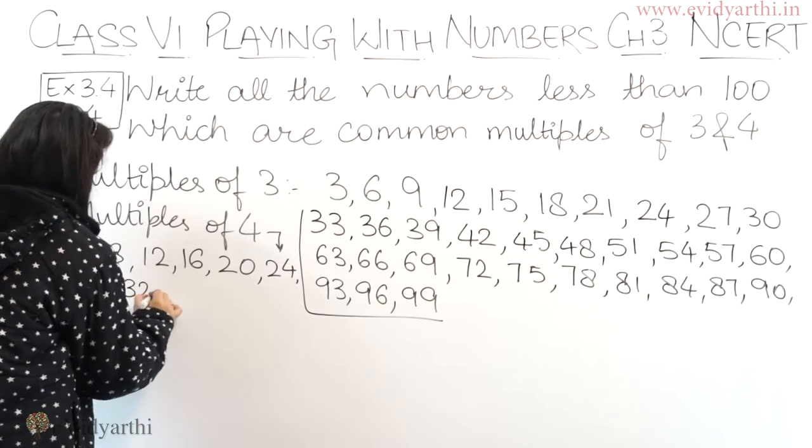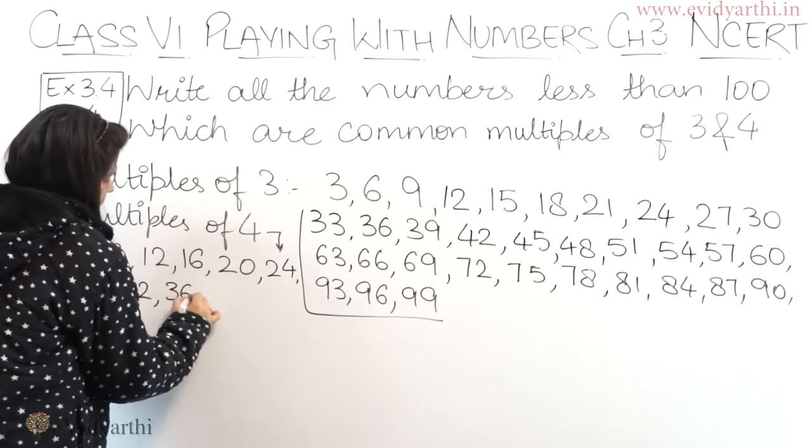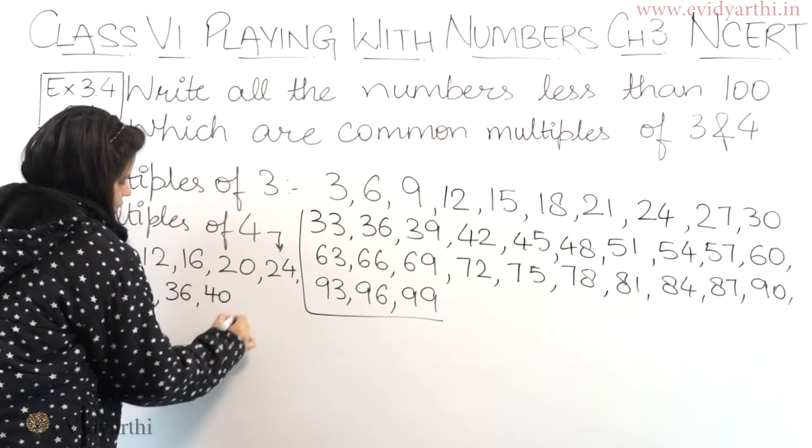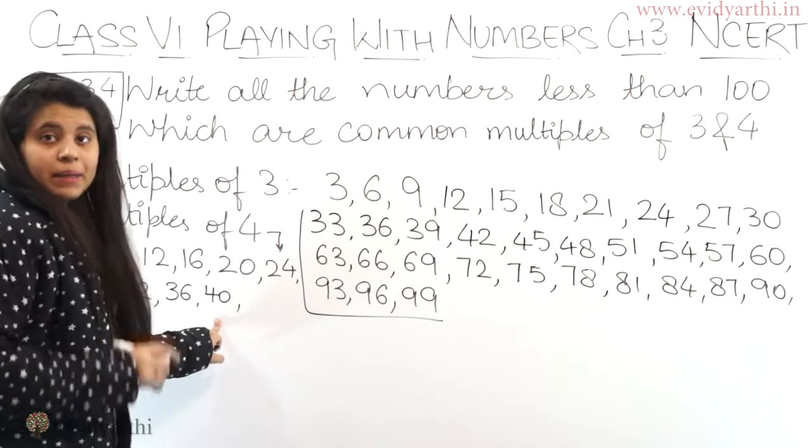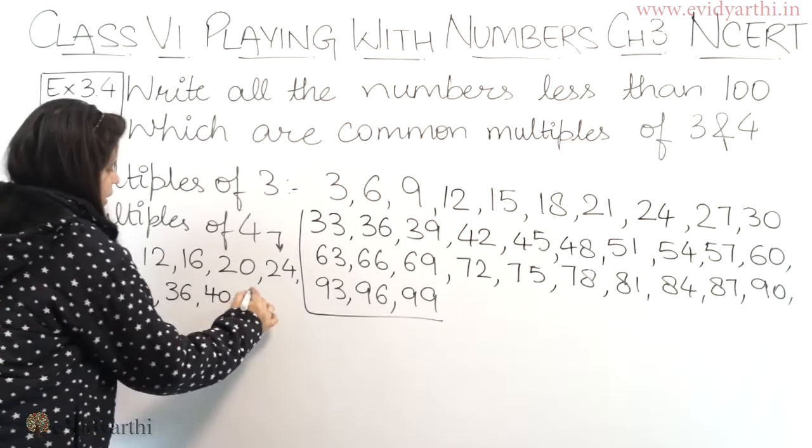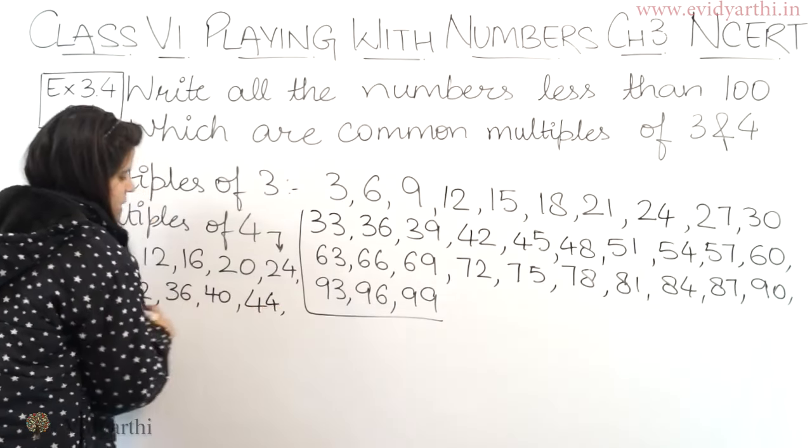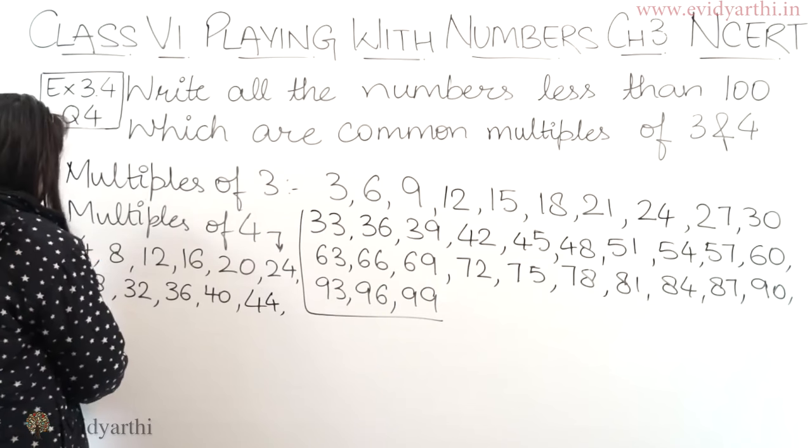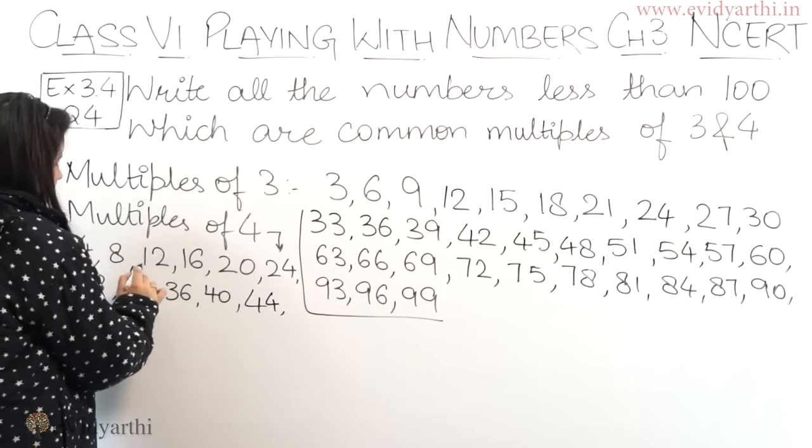4 eights are 32, then 4 nines are 36, 4 tens are 40. Now after this, we just plus 4 as we go forward. So if this is 40, this will be 44. If we add 4, we get 44. So then 48.